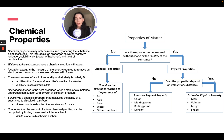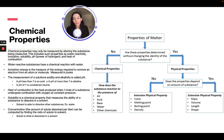Solubility is the chemical property that measures the ability of a substance to dissolve in a solvent — a solvent is able to dissolve other substances, for example water. Concentration is the amount of solute dissolved per liter and can be computed by finding the ratio of solute to solvent. A solute is what is dissolved in the solvent.